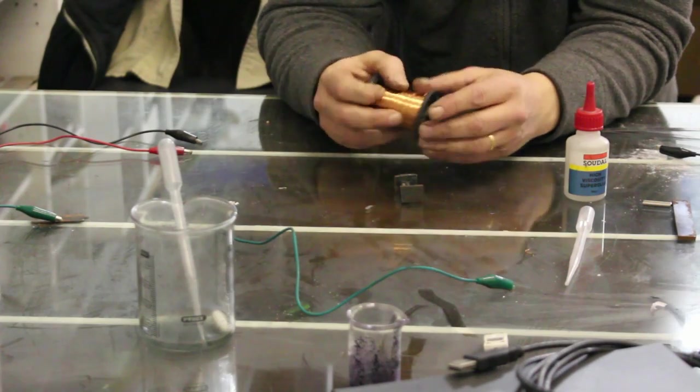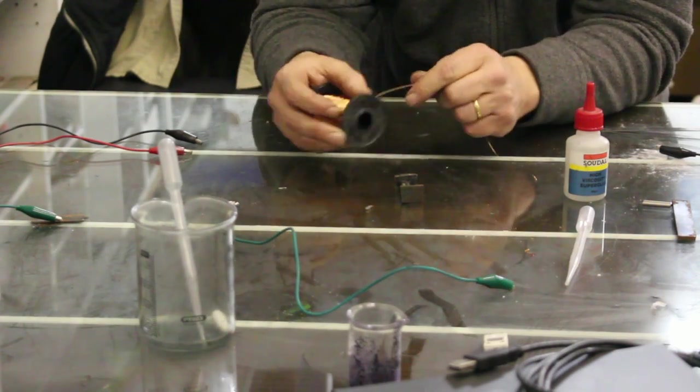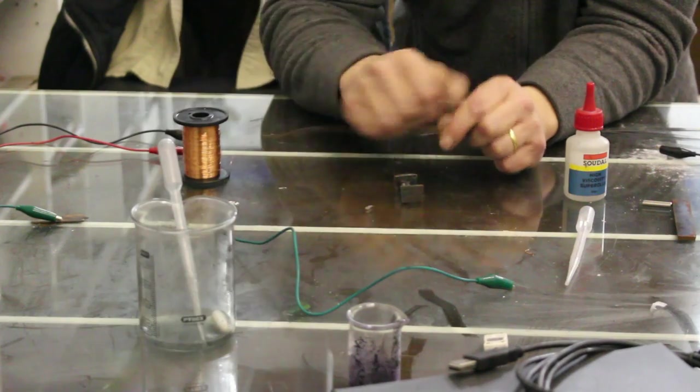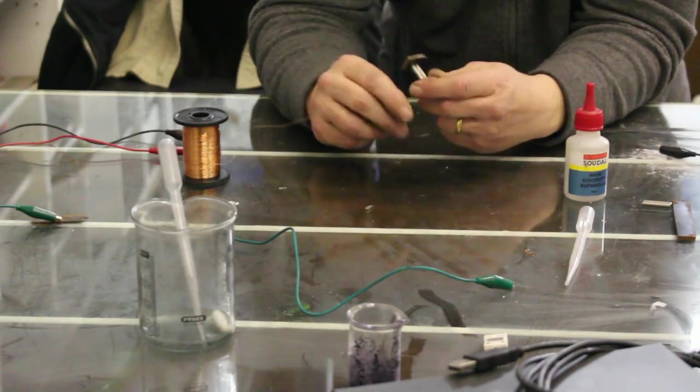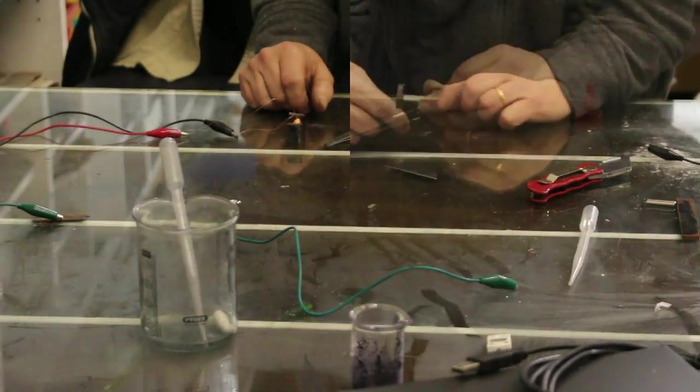Now all we need to do is take some copper wire. The gauge doesn't really matter. And bung a couple of hundred turns on that. And just wind it on. And there it is. Finished and connected up to a power supply.